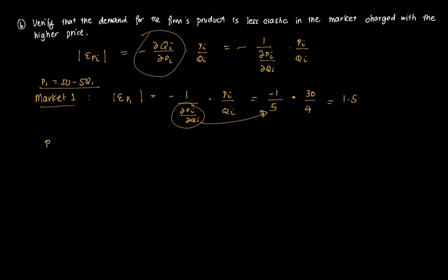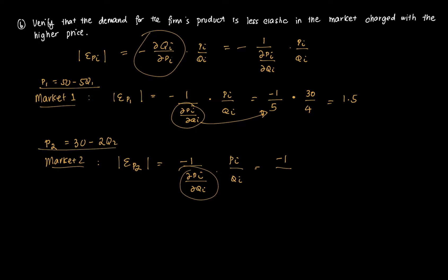For market two, P2 equals 30 minus 2Q2, so the partial derivative with respect to Q2 is negative 2. Using the same formula with P2 equals 20 and Q2 equals 5 gives elasticity EP2 equal to 2. Indeed, the elasticity of market one (1.5) is less than the elasticity of market two (2), confirming that demand in market one is less elastic, which is why it is charged the higher price.